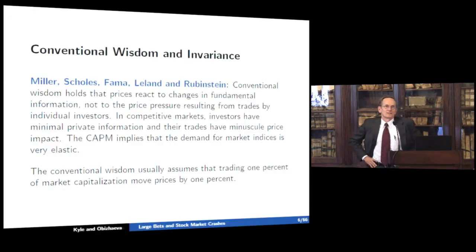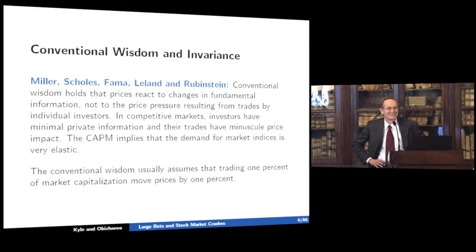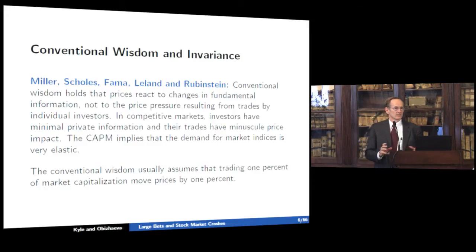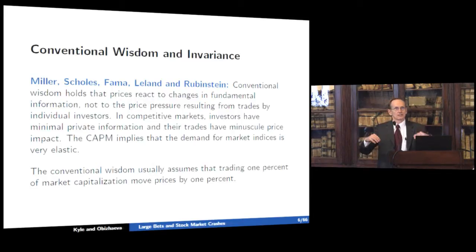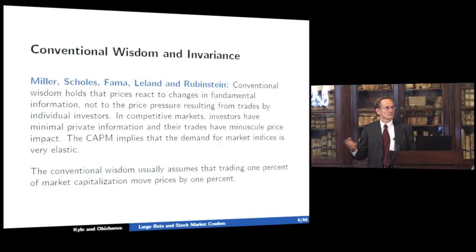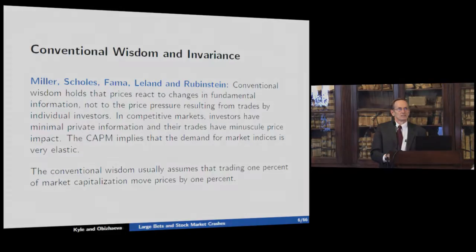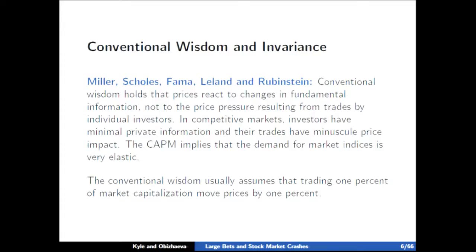In this paper we're going to question some conventional wisdom. The conventional wisdom — from formidable opponents including Myron Scholes, Merton Miller, Eugene Fama, Hayne Leland, and Mark Rubinstein — is that the quantities identified as being dumped into the market during these events should not have had sufficient price impact to cause the observed crashes. The usual view says trading 1% of market capitalization moves prices by no more than 1%, perhaps much less, and therefore you would not expect $4 billion in sales to be associated with a 5% drop in the entire U.S. stock market.